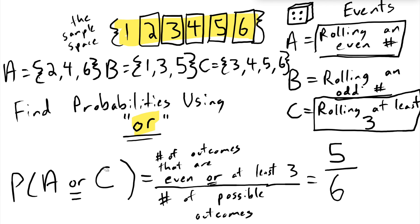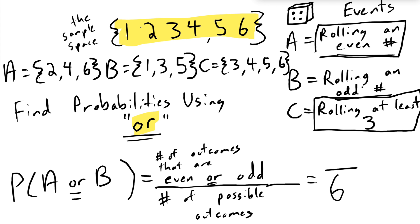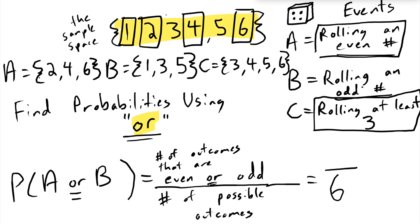What about A or B — numbers that are even OR odd? Let's count the even ones: two, four, and six. Now we also count the odd ones: one, three, and five. It turns out every single number is either even or odd, so this event is certain. There is no way you could roll a six-sided die and get a number that wasn't even or odd. The probability is one.